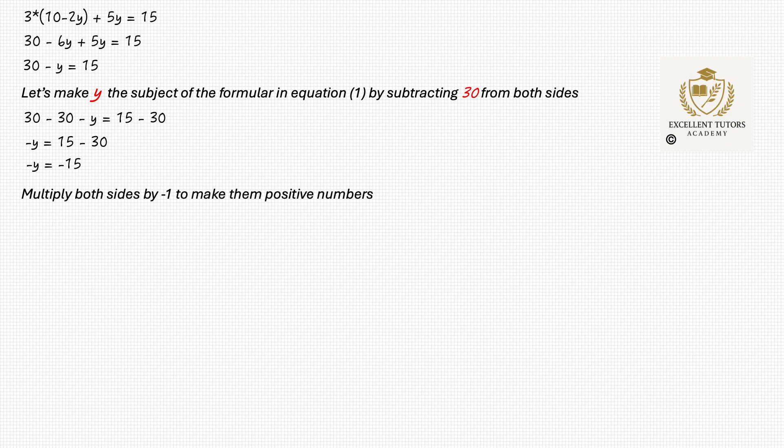We multiply both sides by minus 1 to make them positive numbers. Minus y times minus 1 equals to minus 15 times minus 1, which gives us y equals to 15.